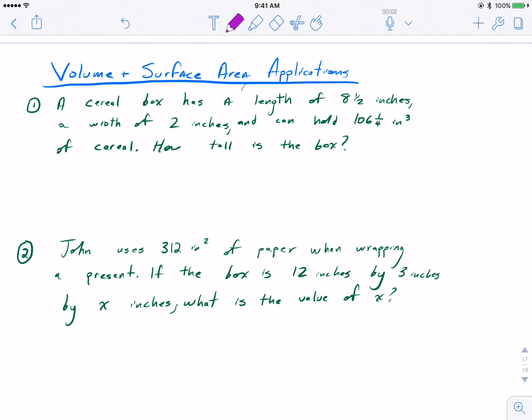It says a cereal box has a length of 8.5 inches, a width of 2 inches, and it can hold 106.25 cubic inches of cereal. How tall is the box? So right away we see the cubic units, which should cue us into the fact that we're dealing with volume here, not surface area.